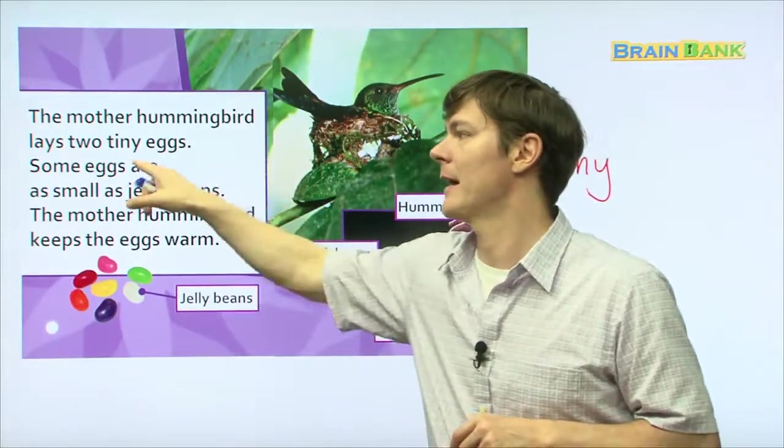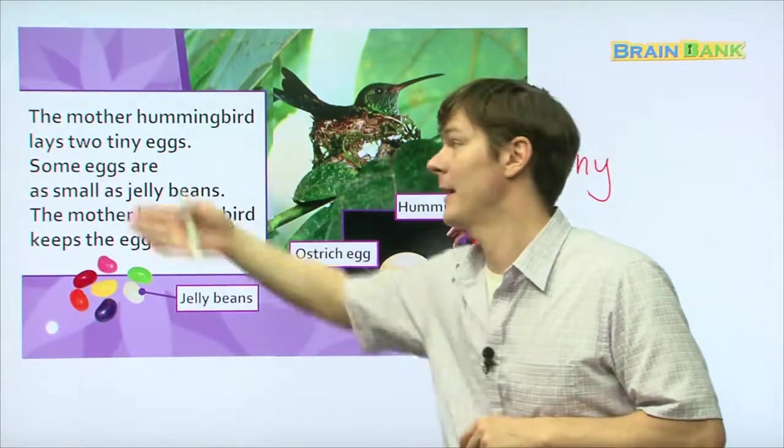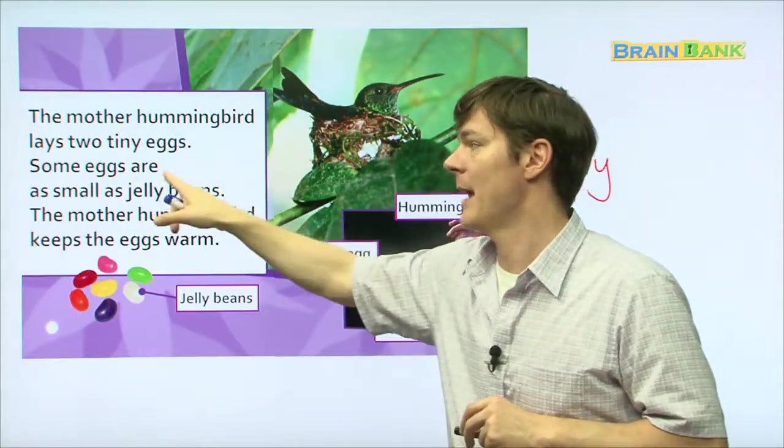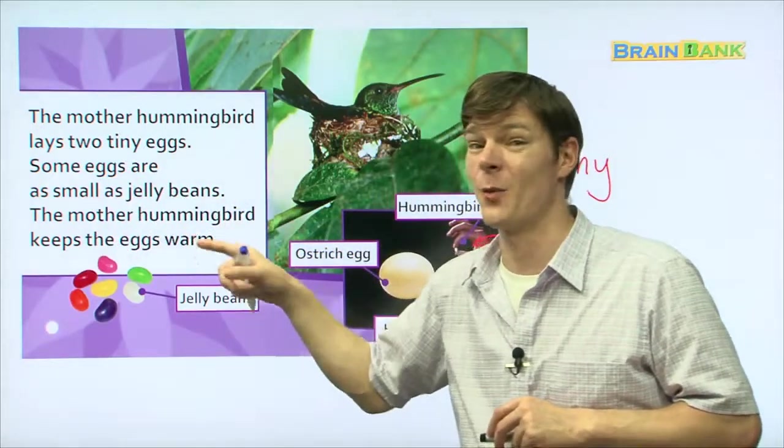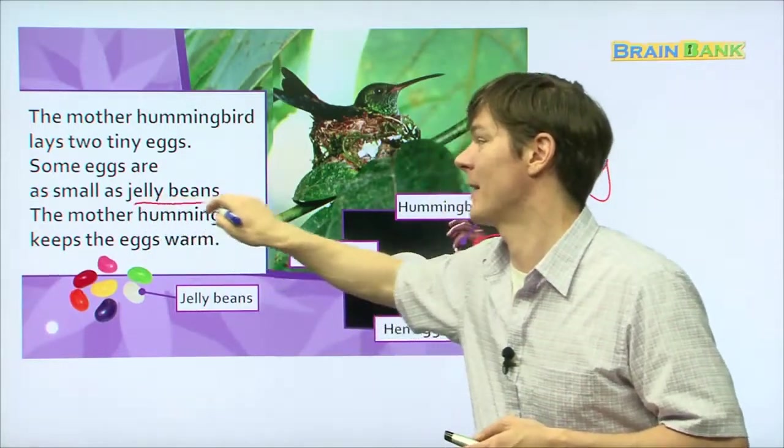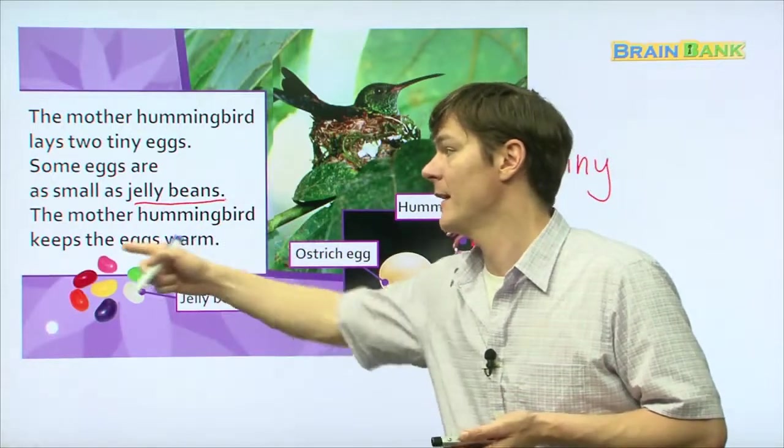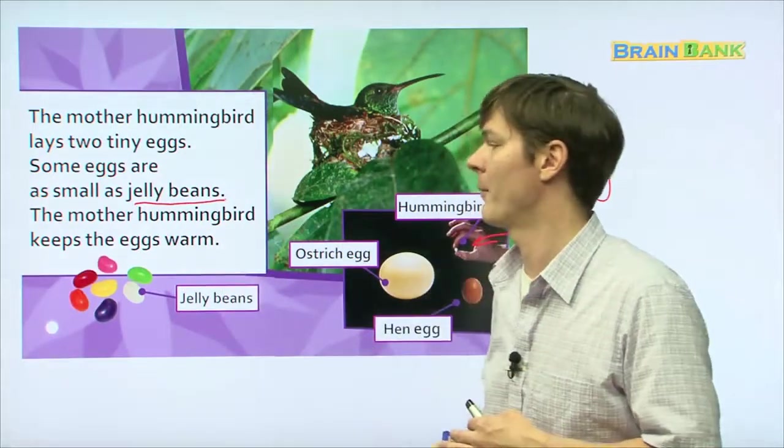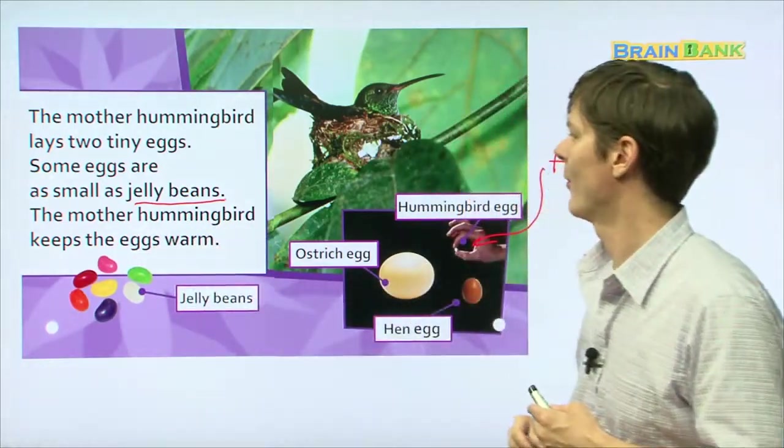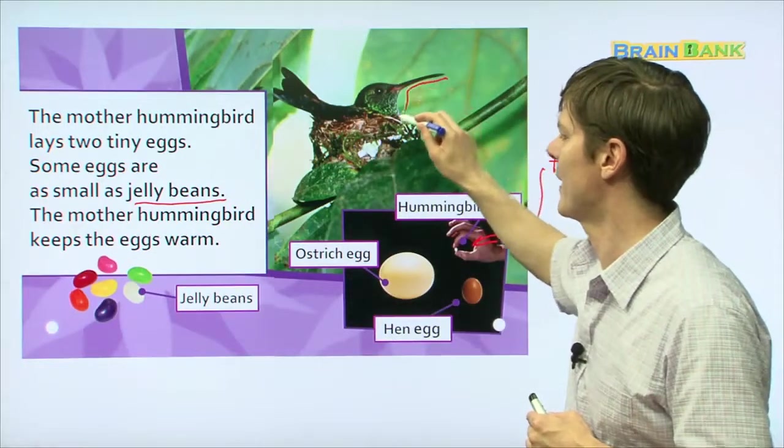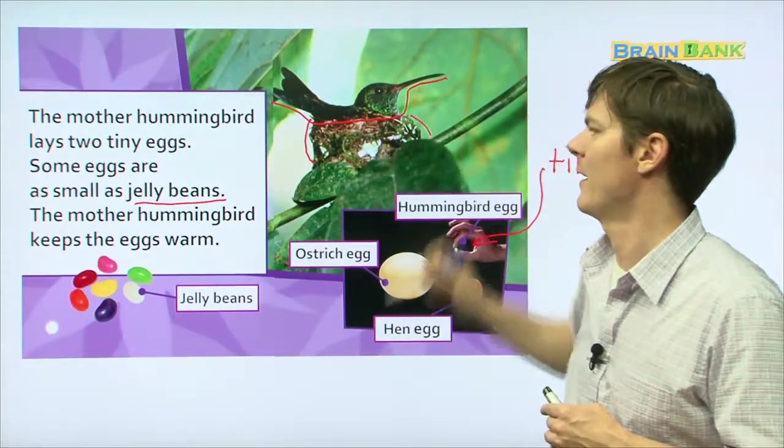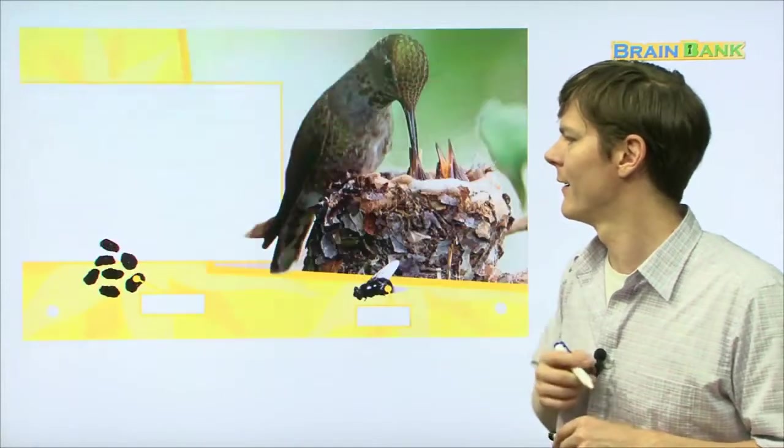The mother hummingbird lays two tiny eggs. Everyone read with me. The mother hummingbird lays two tiny eggs. Some eggs are as small as jelly beans. Everyone. Some eggs are as small as jelly beans. The mother hummingbird keeps the eggs warm. Everyone read with me. The mother hummingbird keeps the eggs warm. That's amazing. There she is. Here's the mommy hummingbird sitting on the eggs. And here is the nest.